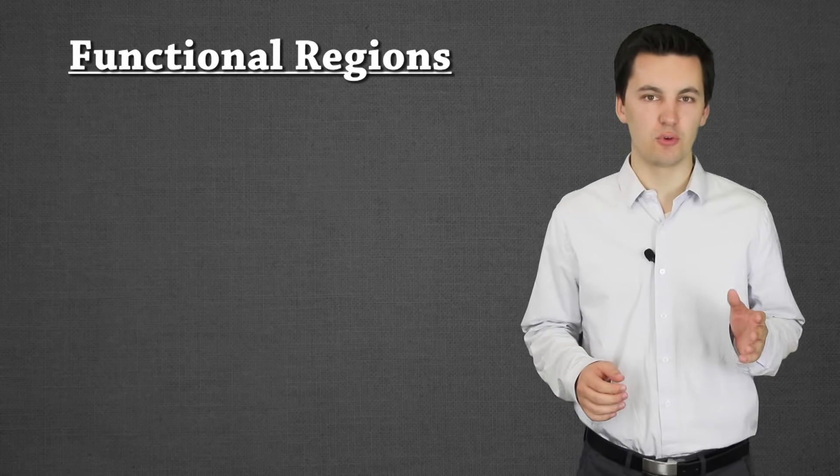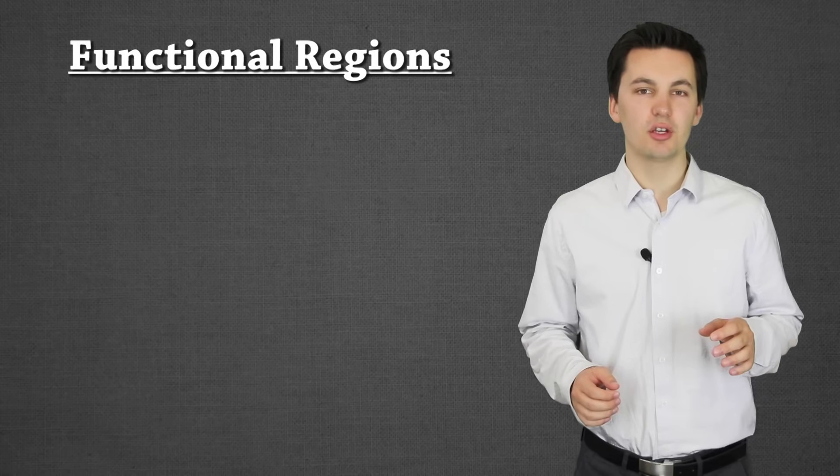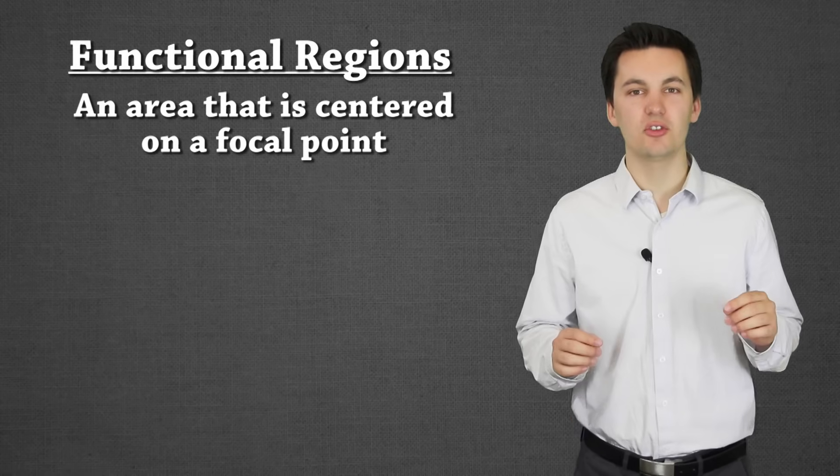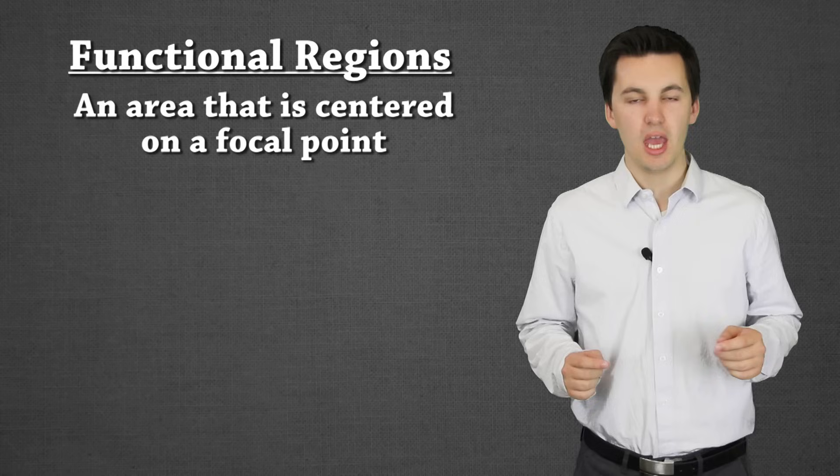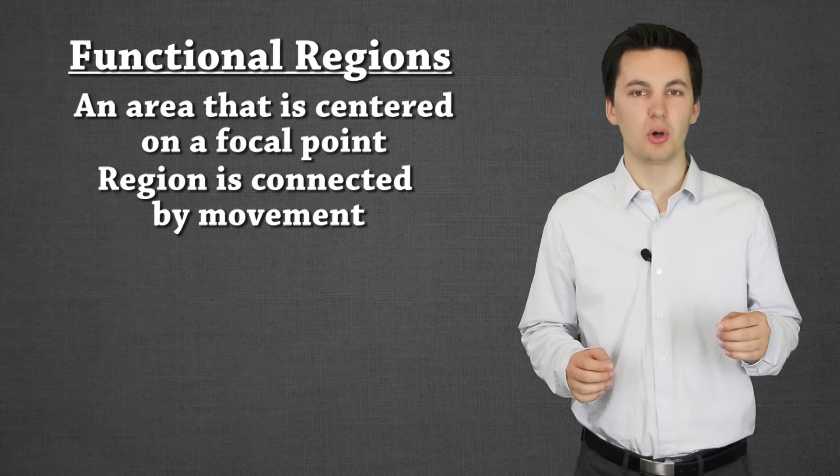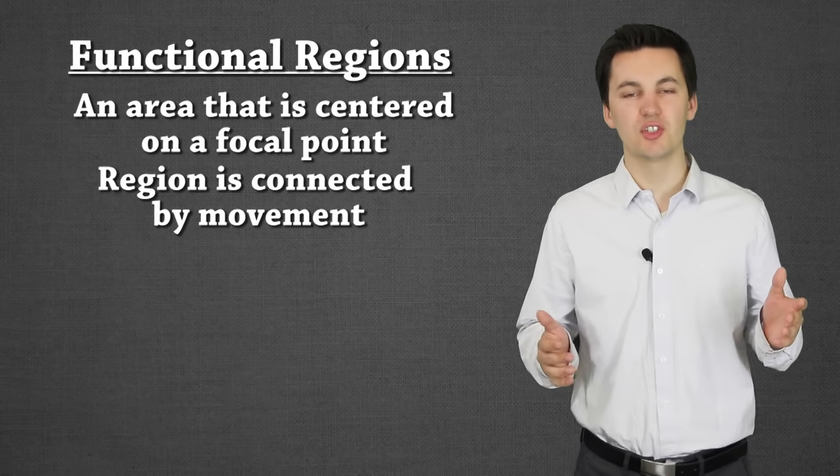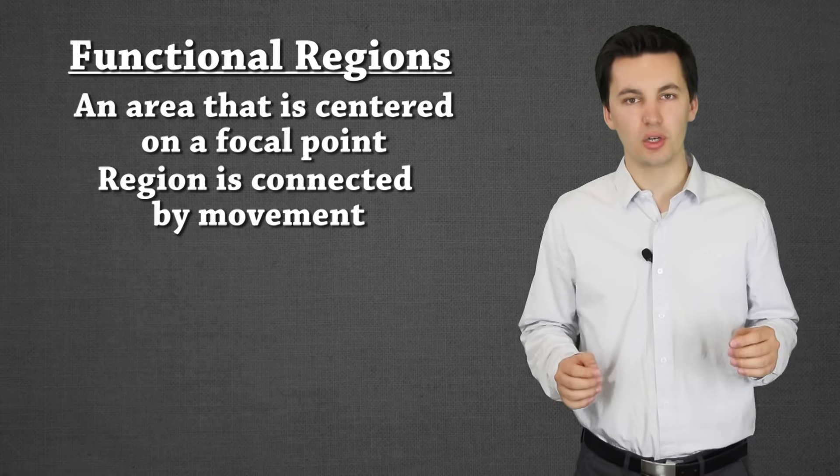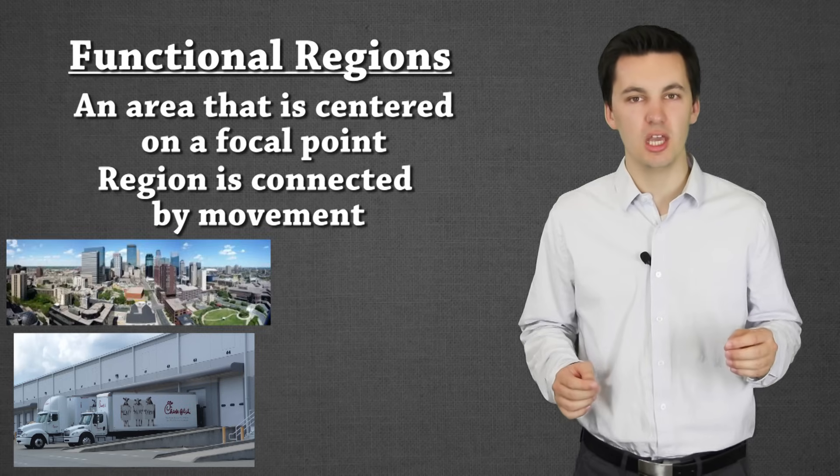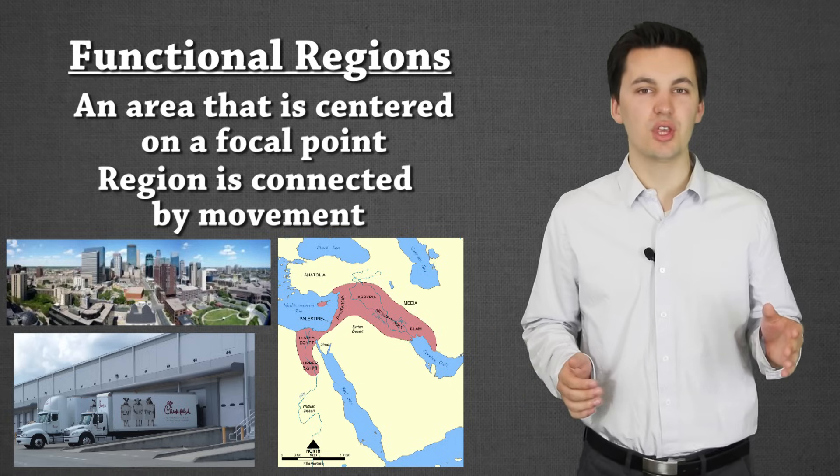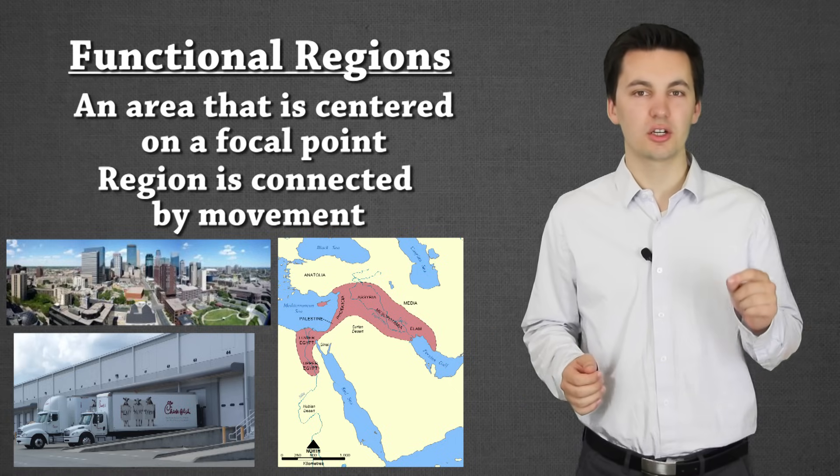Now our next type of region is functional. And this is a little bit different than our formal region. The main focus here is a functional region has a center point. It has a central hub, a node, something that is the epicenter of the surrounding area. And it's connected by movement. That central hub is the focal point that helps support the surrounding areas. Without the central hub, the surrounding areas probably wouldn't even be in this region. And so it's important. It could be a distribution center. It could be a major city. It could even be a river that is supplying water to support the local community. All these different things. Functional regions are connected by movement.